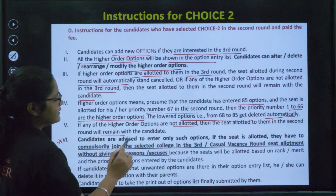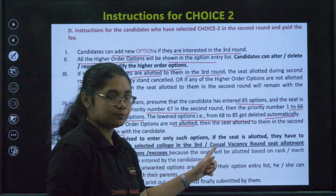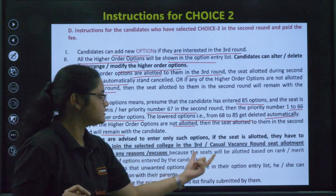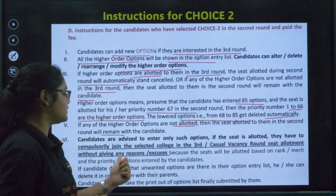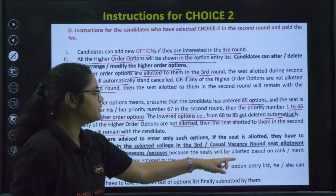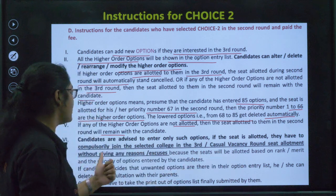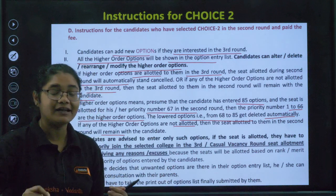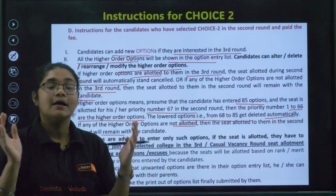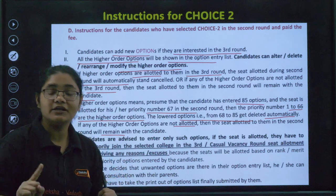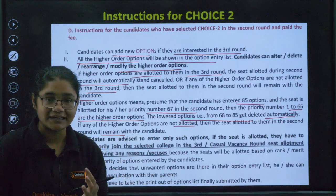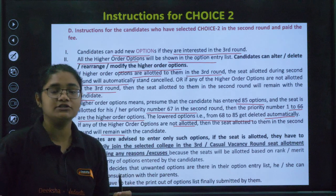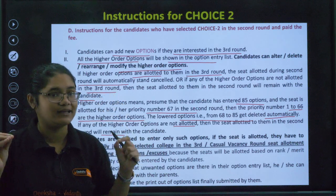Something very important: candidates are advised to enter only those options where, if the seat is allotted, they will compulsorily join the selected college in the third or casual vacancy seat allotment — without giving any reasons or excuses. Seats will be allotted based on rank, merit, and the priority of options entered. After Round 3, there is no option for seat cancellation — you have to compulsorily join.